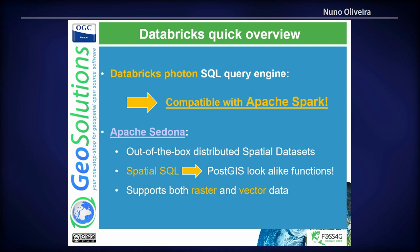Databricks provides two SQL endpoints: the new Photon Engine, which is quite fast but also a lot more expensive, and the standard Apache Spark-compatible engine. We send an SQL query and it becomes an Apache Spark job reading from the cluster. We also use Apache Sedona, which provides spatial SQL operations very similar to PostGIS — intersects and similar — supporting both raster and vector data.